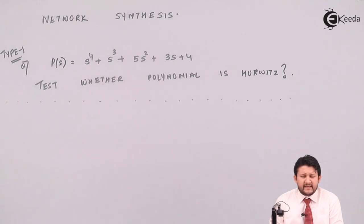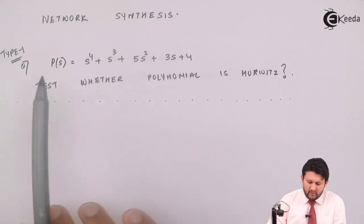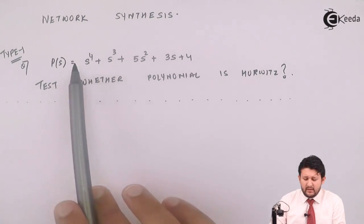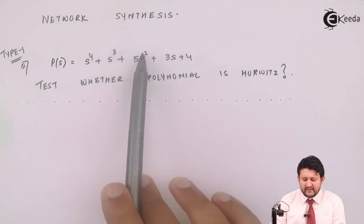Step number three: there should not be any missing term in between. Step number four: the powers can be even or odd, but again there should not be any missing term between that. These four steps are most important to start with Hurwitz Polynomial. Again, step number one: your coefficients should be positive. Step number two: the powers should be in descending form.